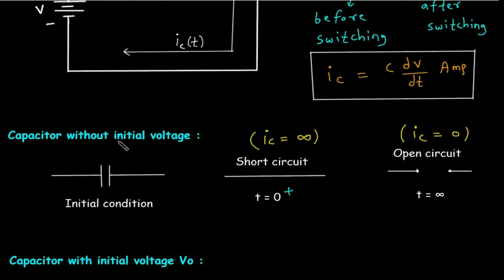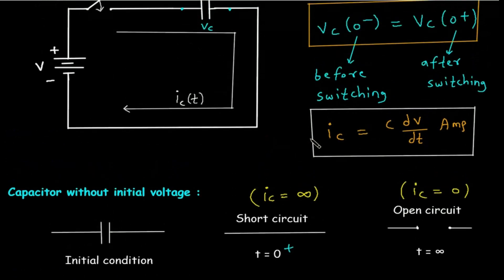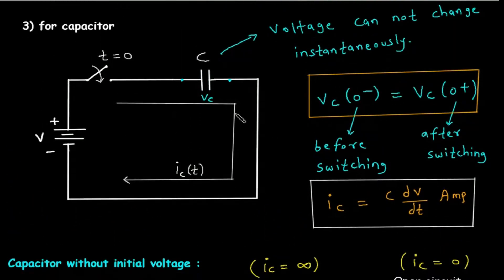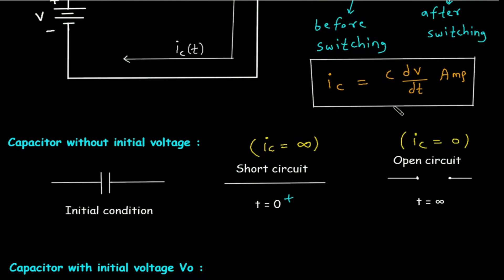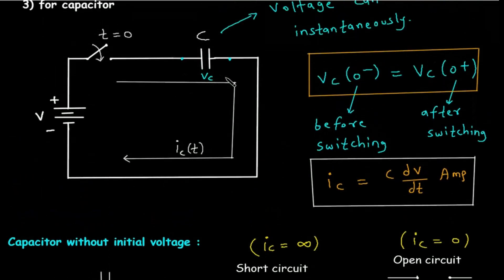For a capacitor without initial voltage, the initial condition is zero voltage. At t=0⁺, when the switch is closed, the capacitor acts like a short circuit because substituting t=0 makes IC infinite, and infinite IC means the capacitor is short-circuited. When t=∞, IC will be 0, meaning the capacitor is open-circuited.